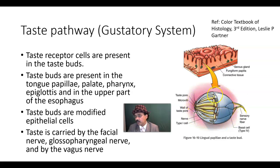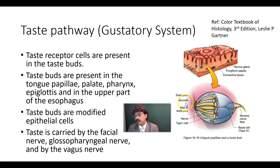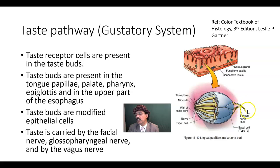This is the structure of the taste bud. We have the wall of the taste pore, we have some microvilli that pick up the food substance in close contact with the epithelial cell, and there will be a response in the epithelial cell that will be transmitted through the sensory neuron. This nerve fiber makes a synapse with the epithelial cells.